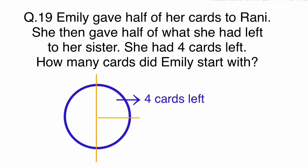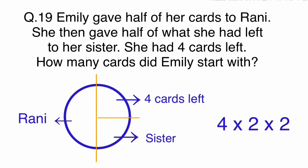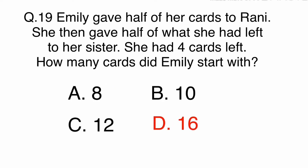If Emily had 4 cards left, she would have given 4 to her sister. If she gave half of her cards to Rani, Rani would have 8 cards. 4 times 2 times 2 equals 16. The answer is D. 16.